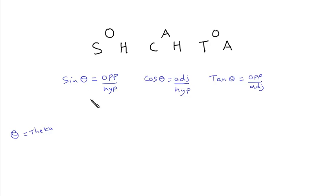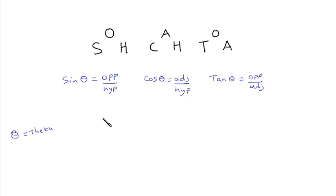We're looking at how to find the angle in a triangle. But these formulae tell us not how to find the angle itself, but how to find the sine, cosine, or tangent of the angle. So there's one extra step we need to do — once we've found the sine, cosine, or tangent of the angle — to find the angle itself.